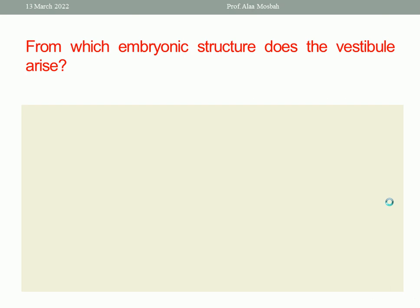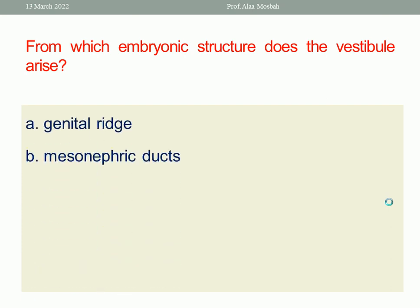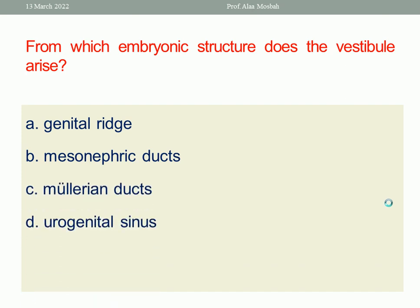From which embryonic structure does the vestibule arise? Genital ridge, mesonephric ducts, Müllerian ducts, urogenital sinus. The vestibule, embryologically, is derived from the urogenital sinus. As we know, the urogenital sinus gives the lower-most part of the vagina and the vestibule. So the right answer is urogenital sinus.